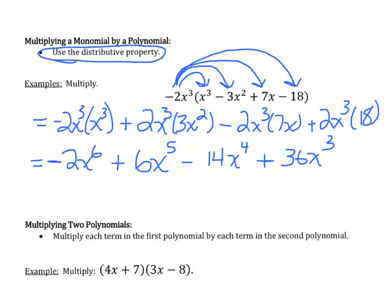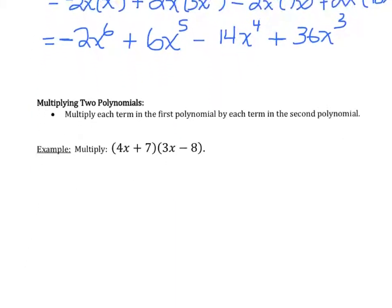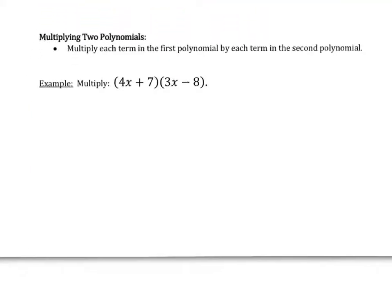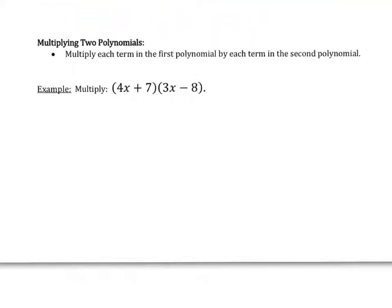The last technique we're going to look at is multiplying two polynomials. To multiply two polynomials, you multiply each term in the first polynomial by each term in the second polynomial, so that every combination of terms gets multiplied by each other.